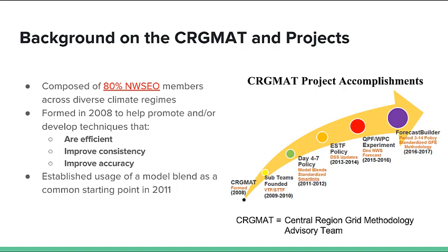Over the course of time we've gone through various policies and experiments. One of the biggest was during 2011 and 2012, where we implemented the approach of utilizing model blends as a common starting point, which also required standardizing smart units to ensure that the model blends were the same from office to office. After that we went through the enhanced short-term forecast and the QPF WPC experiment. Then in 2016, the team created and deployed Forecast Builder across Central Region, connecting the enhanced short-term forecast policy to day 4 through 7, filling a gap with a period 3 through 14 policy, and deploying a standardized GFE methodology.